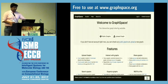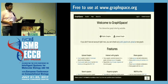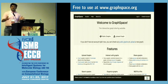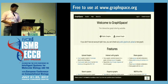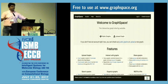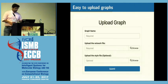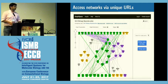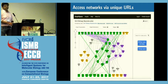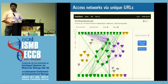Overall, Graphspace has a very simple interface. We've tried to make it very easy for anyone to get started. You can go to www.graphspace.org, click on the upload graph button, upload a network in JSON format, and there you go. You can access your network at a unique URL. And all of this is free to use. You don't even have to sign up to get started.